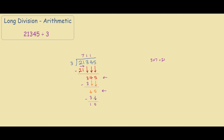So now we have 15. Our focus shifts down to the 15. We ask ourselves how many times can 1 be divided by 3 — 0 times. So we go on to the next number, 15, and say how many times can 15 be divided by 3. The answer is 5, because 3 times 5 equals 15. So we do 3 times 5 equals 15, subtract it, and we're left with 0.